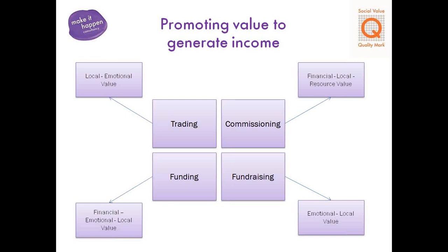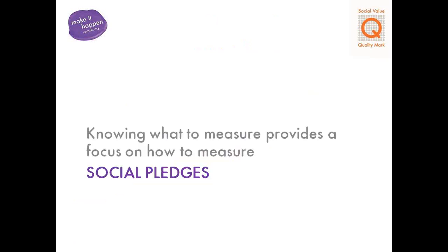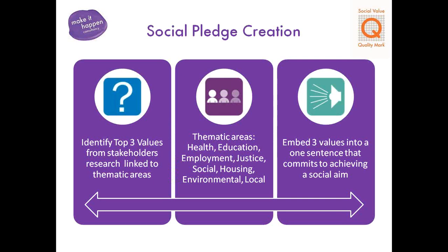If you speak to public sector commissioners, they'll say it's all about reducing dependency on resources, looking at value for money, and making sure it's local. The information you get back has a very clear message to demonstrate your value and generate income from it. That's one of the ways we've been successful in creating £161 million in demonstrated value — by demonstrating value to stakeholders.